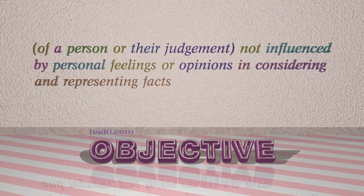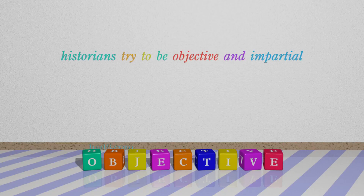Number 7: Objective — which means of a person or their judgment, not influenced by personal feelings or opinions in considering and representing facts. For example: Historians try to be objective and impartial.